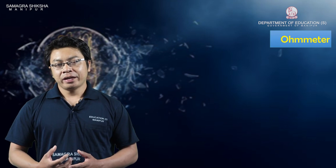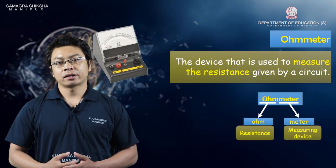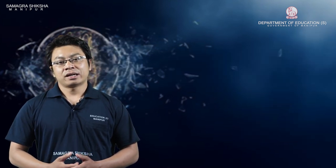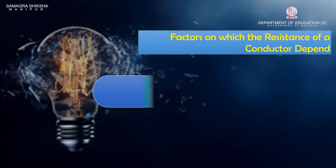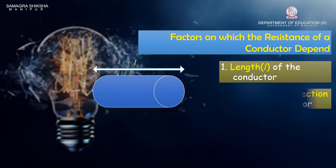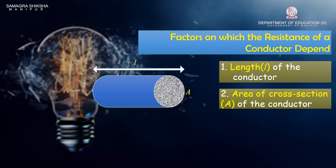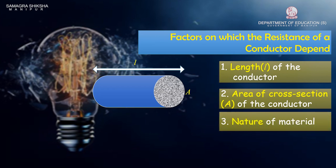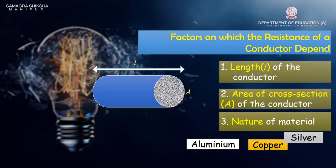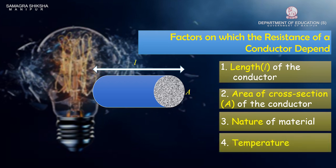An ohmmeter measures resistance in an electric circuit or conductor. The resistance of a conductor depends on several factors: the length of the conductor, the area of cross-section, the nature of the material (for example, aluminum, copper, or silver), and the temperature. If the conductor is aluminum or copper, the resistance will differ. Temperature also affects the resistance of the conductor.